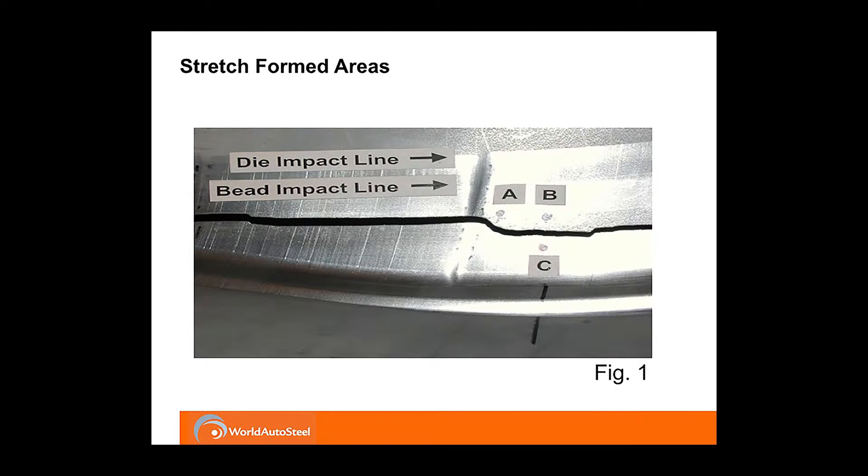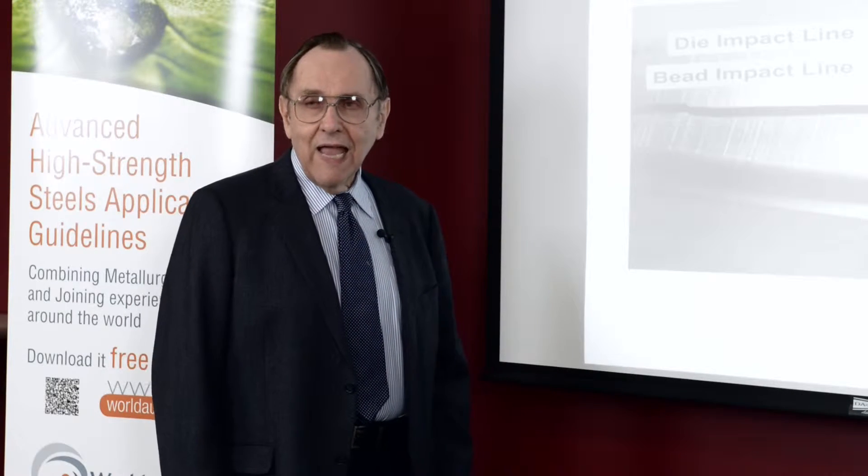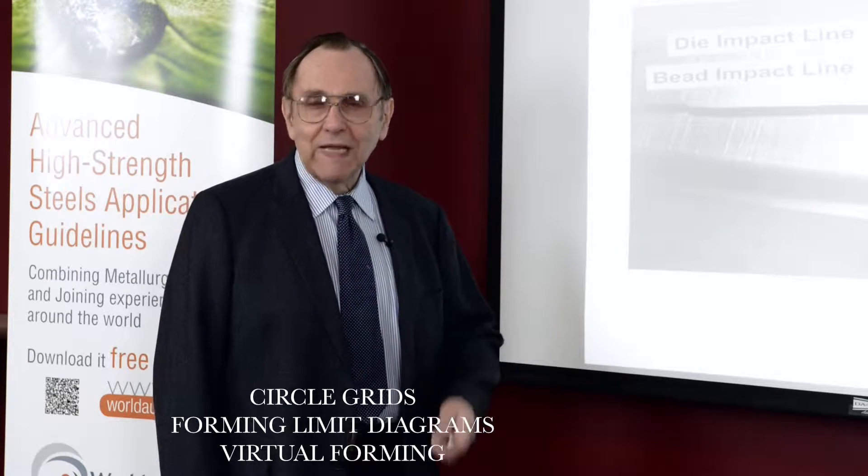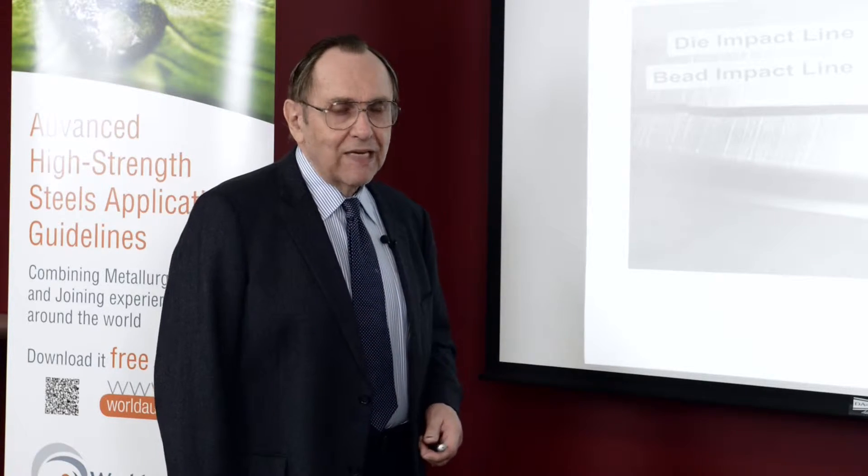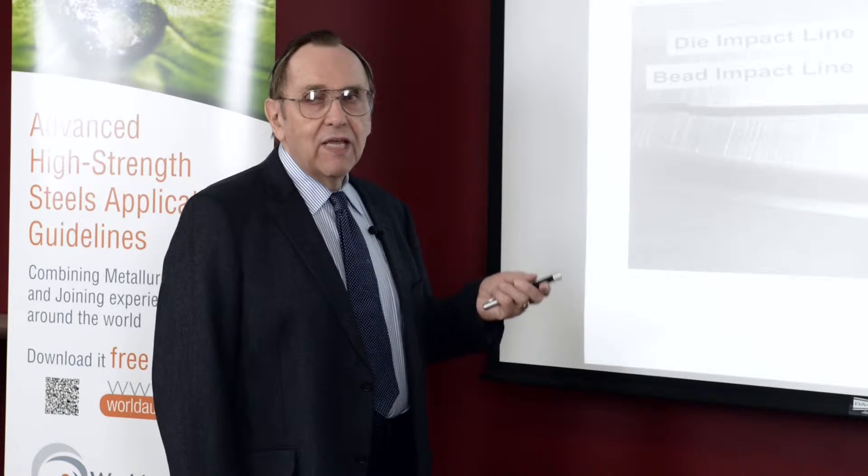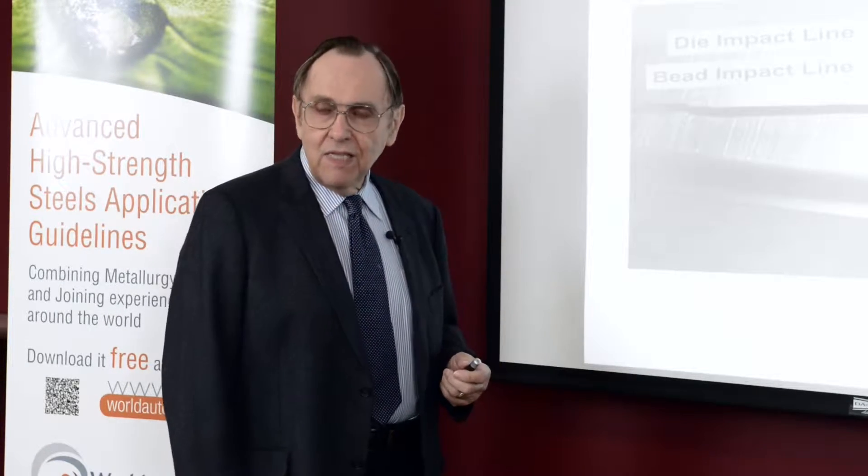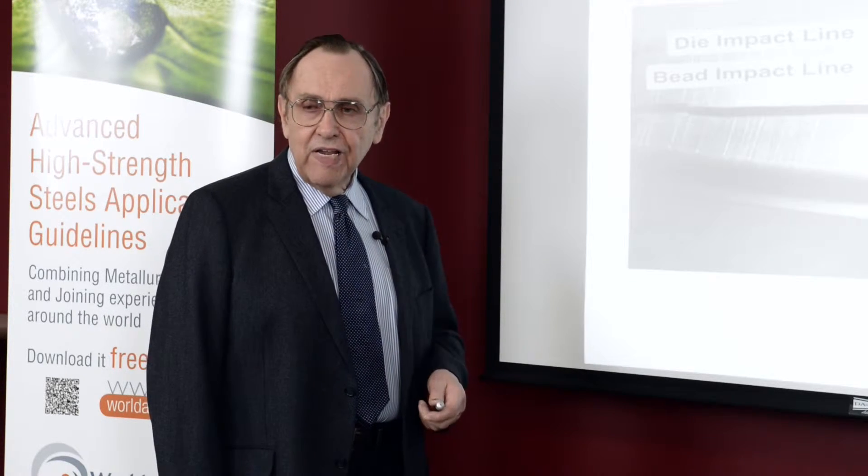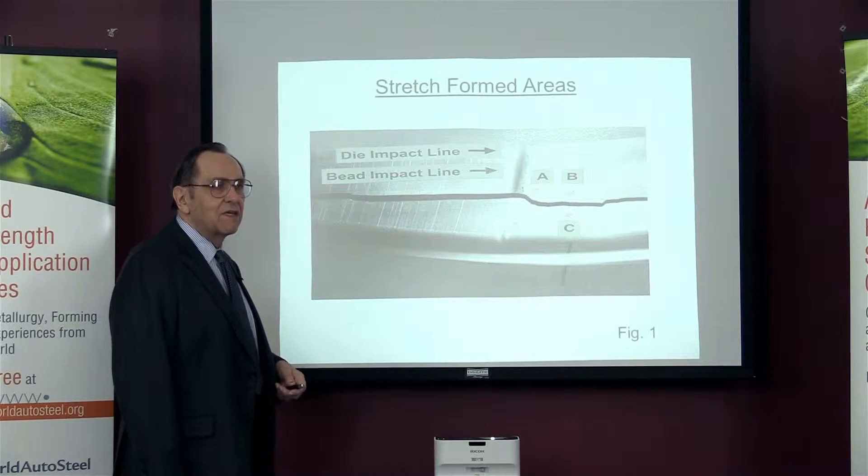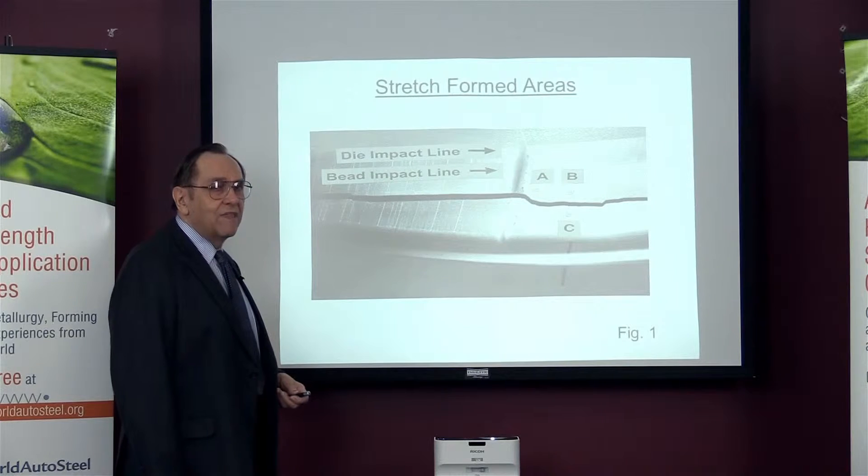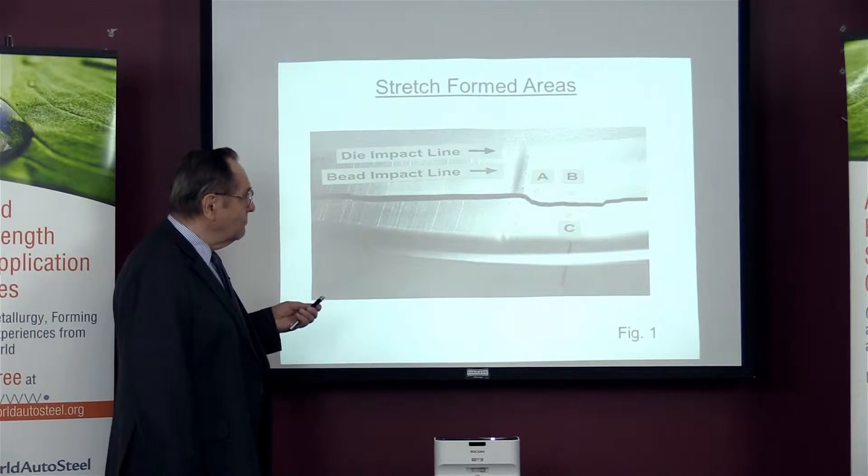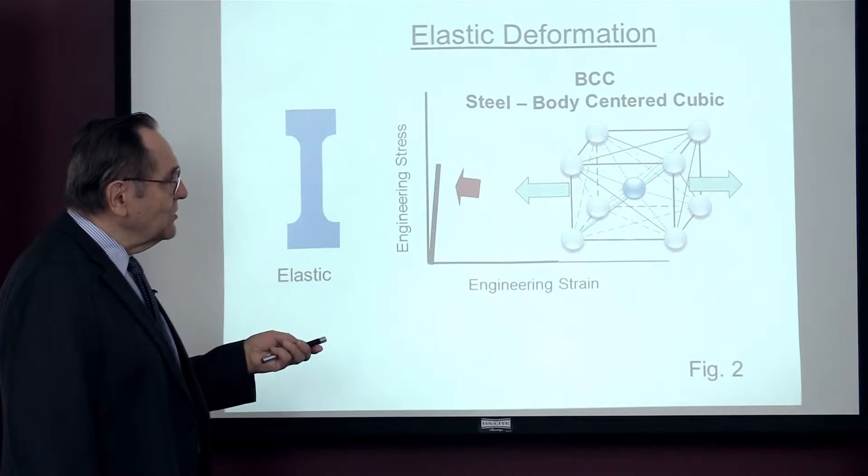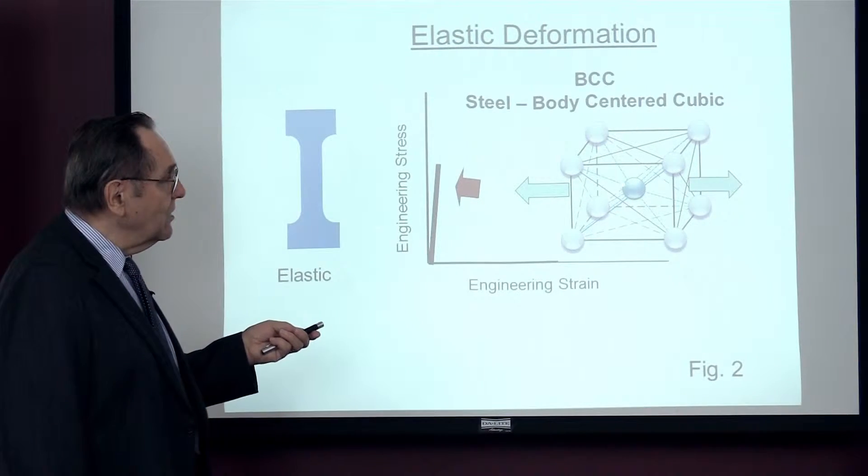But we've learned to minimize these through looking at the deformation through circle grids, forming limit diagrams, through virtual forming and other technologies. Now the number one problem is the dimensional stability of variations deviating from the specification. And that comes from the elastic stresses, not the plastic deformation that we're used to, but from the elastic stresses which originate in the atomic cube right here, which is the smallest structure of metal.